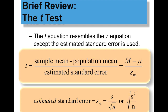Your T equation looks a lot like your Z equation, except because we don't know a lot about the population mean and standard deviation, we have to use the estimated standard error. So: T equals sample mean minus population mu, divided by the estimated standard error. Estimated standard error equals standard deviation divided by the square root of n. Or if you only have variance, estimated standard error equals the square root of variance divided by the sample size.